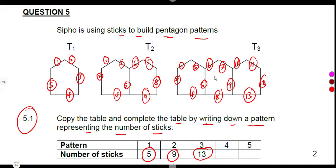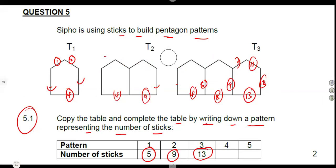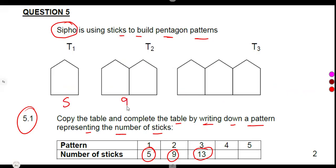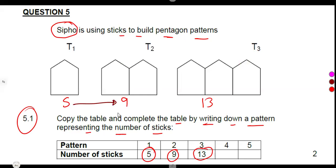So what is actually happening here? What is happening from one pattern to another? We are saying pattern one has five, pattern two has nine, pattern three has thirteen. From the previous term to get the next one, we are simply adding four. The difference nine minus five is four, and thirteen minus nine is again a difference of four.